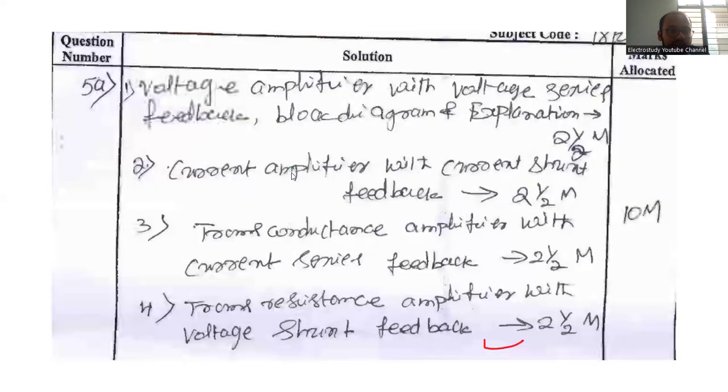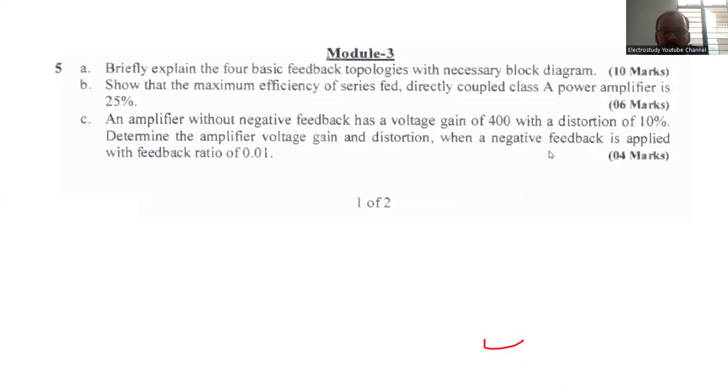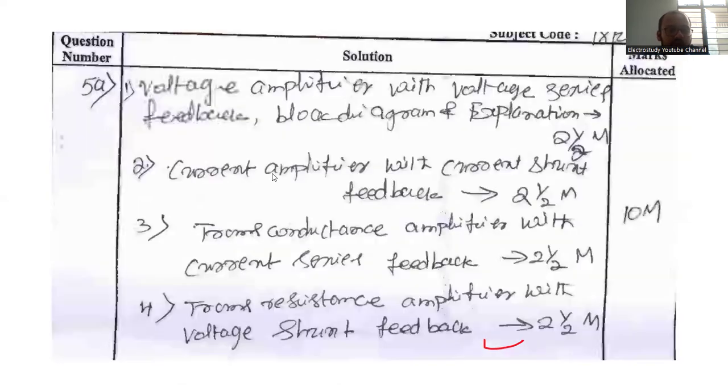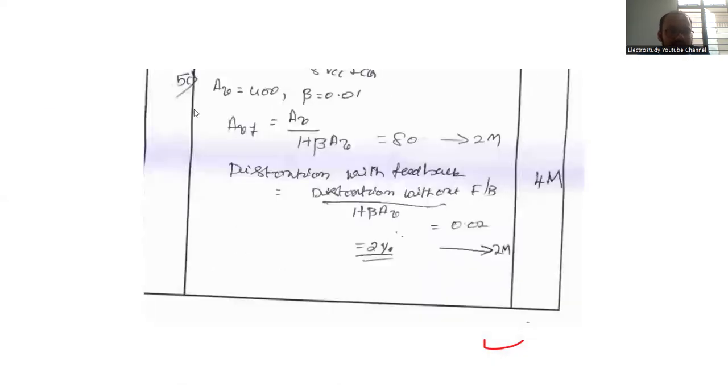And now 5C, question number 5C. There is a numerical example. Amplifier without negative feedback voltage is 400 with a distortion 10%. Determine the amplifier voltage gain and distortion when the negative feedback is applied with the feedback ratio of 0.01. Look at the 5C, given data is already provided, use the formula. Then distortion with the feedback, that formula you have to follow. Ultimately, you will be getting the answer as 2 percentage, 0.02, that is 2 percentage.